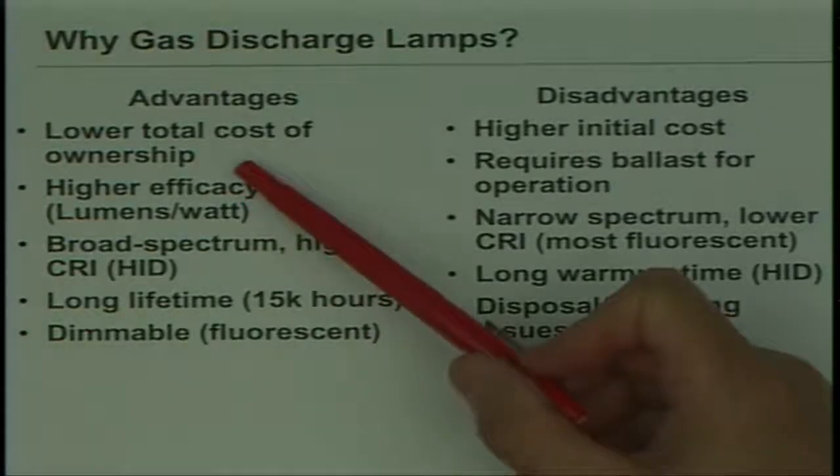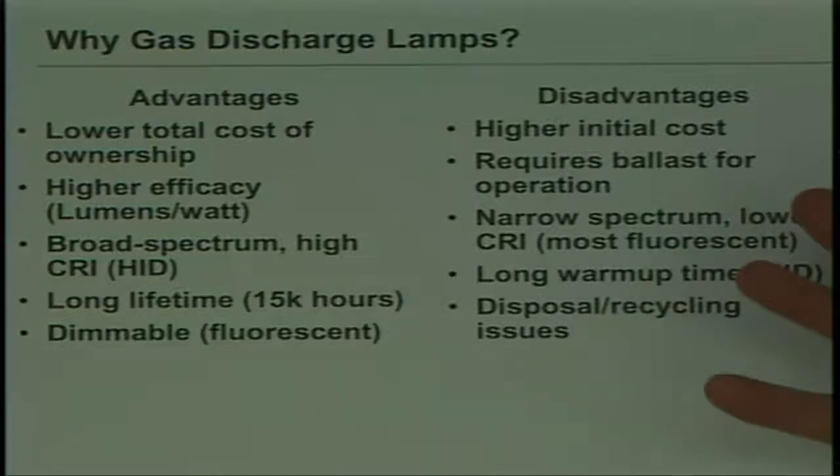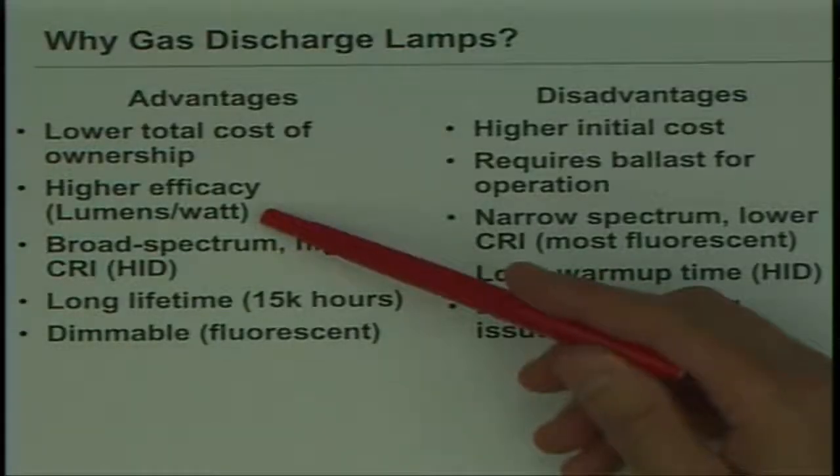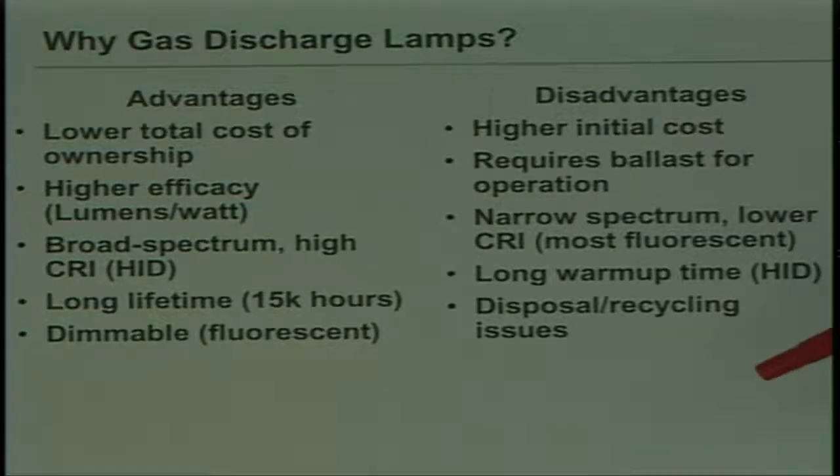Looking at advantages and disadvantages, you can get a lower total cost of ownership. You invest more upfront in the lamp, but theoretically you get a longer lifetime. Those of you who have bought CFLs at Home Depot and been promised 20,000 hours are probably wondering, do you really get a lower total cost? So there's a higher initial cost. If they're well designed and used properly, they should give lower total cost of ownership. They provide higher efficacy and more lumens per watt. Typically, compared to a traditional incandescent lamp, you get about four to five times higher lumen efficacy from a fluorescent lamp.